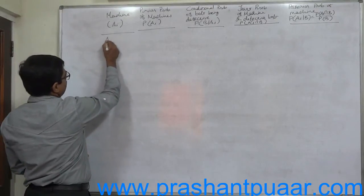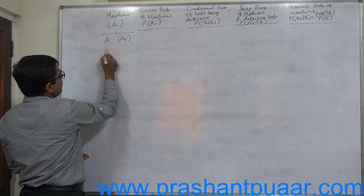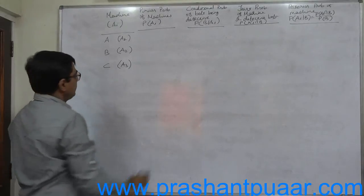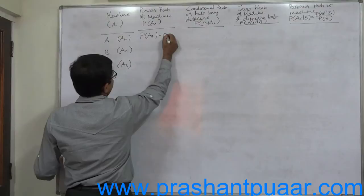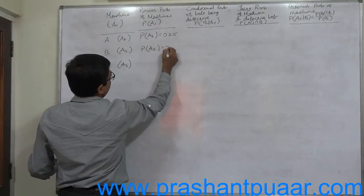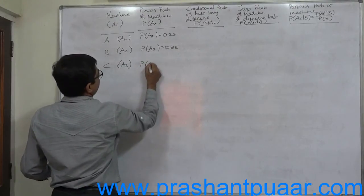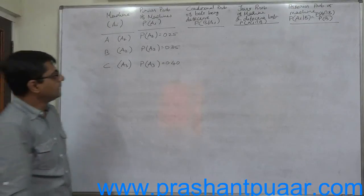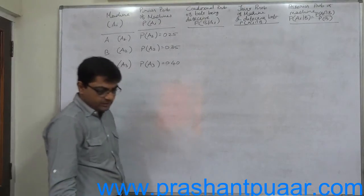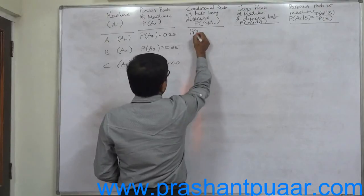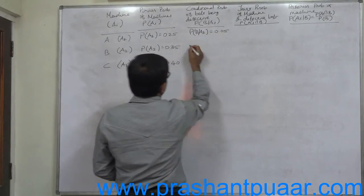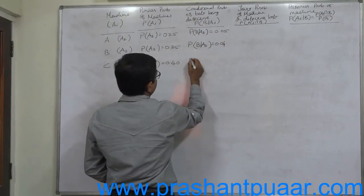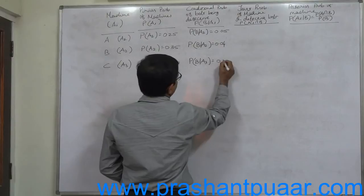There are three machines: event A1 with P(A1) = 0.25, event A2 with P(A2) = 0.35, and event A3 with P(A3) = 0.4. Prior probabilities are different. Now the conditional probabilities: P(B|A1) = 0.05, P(B|A2) = 0.04, and P(B|A3) = 0.02.